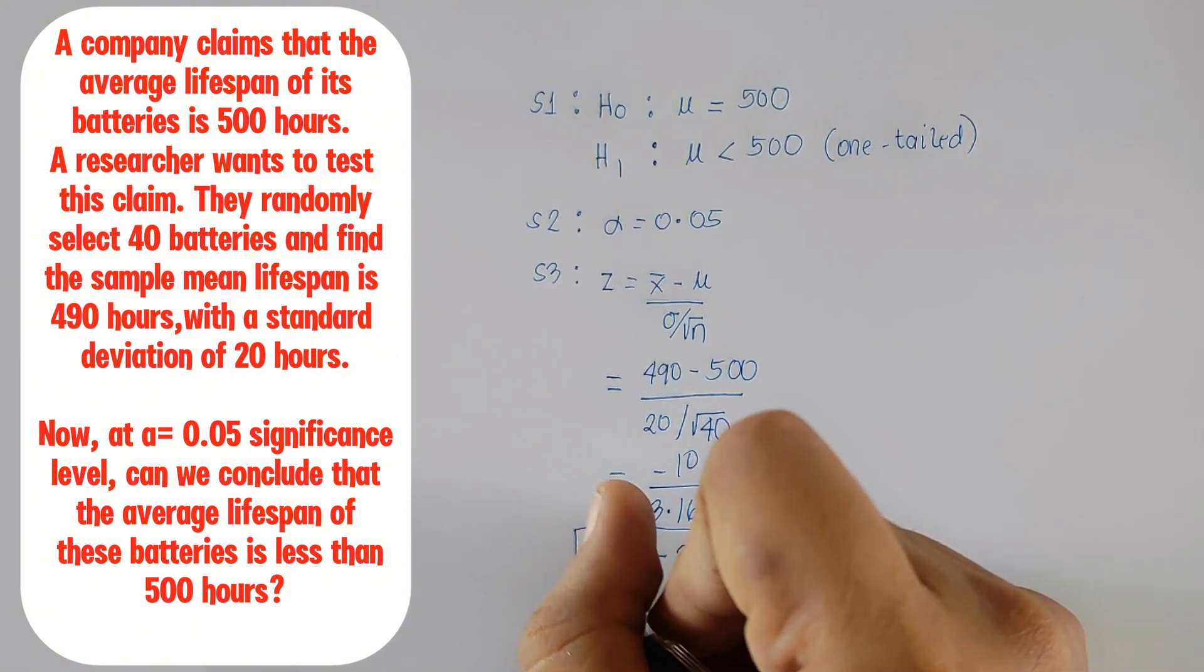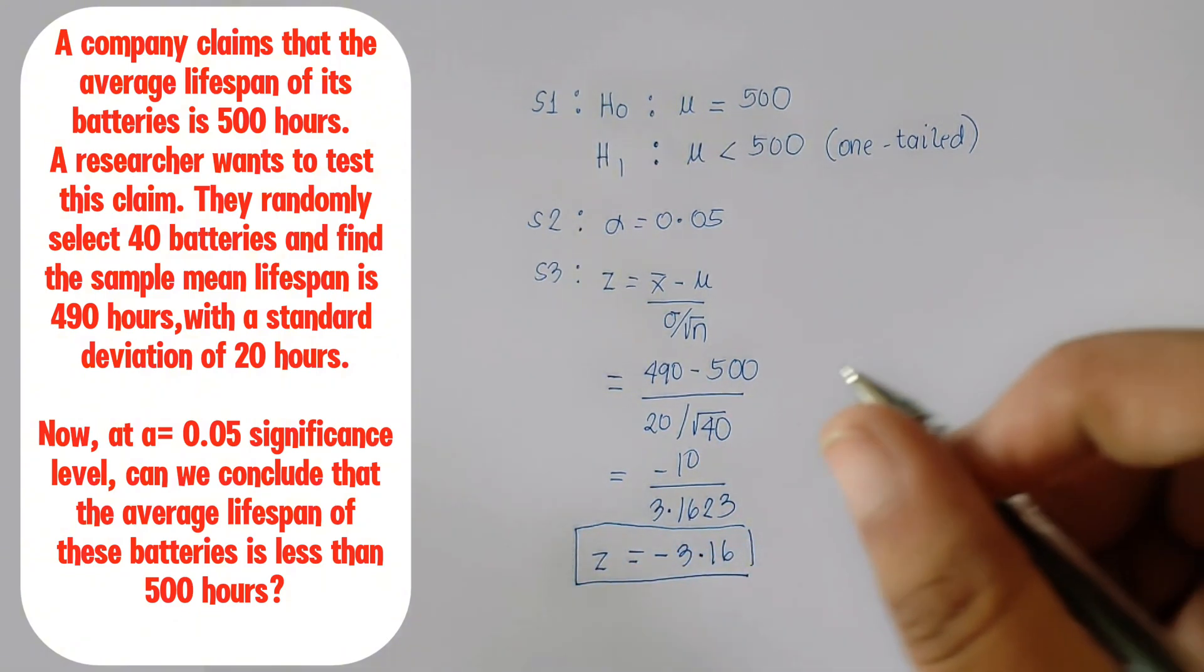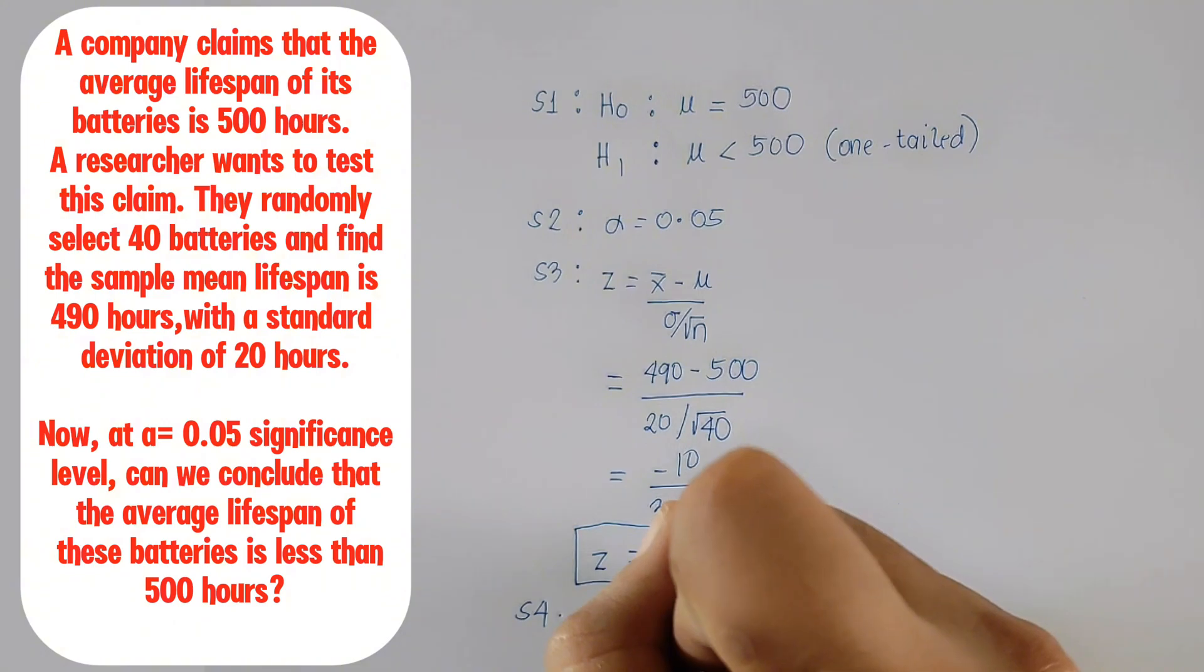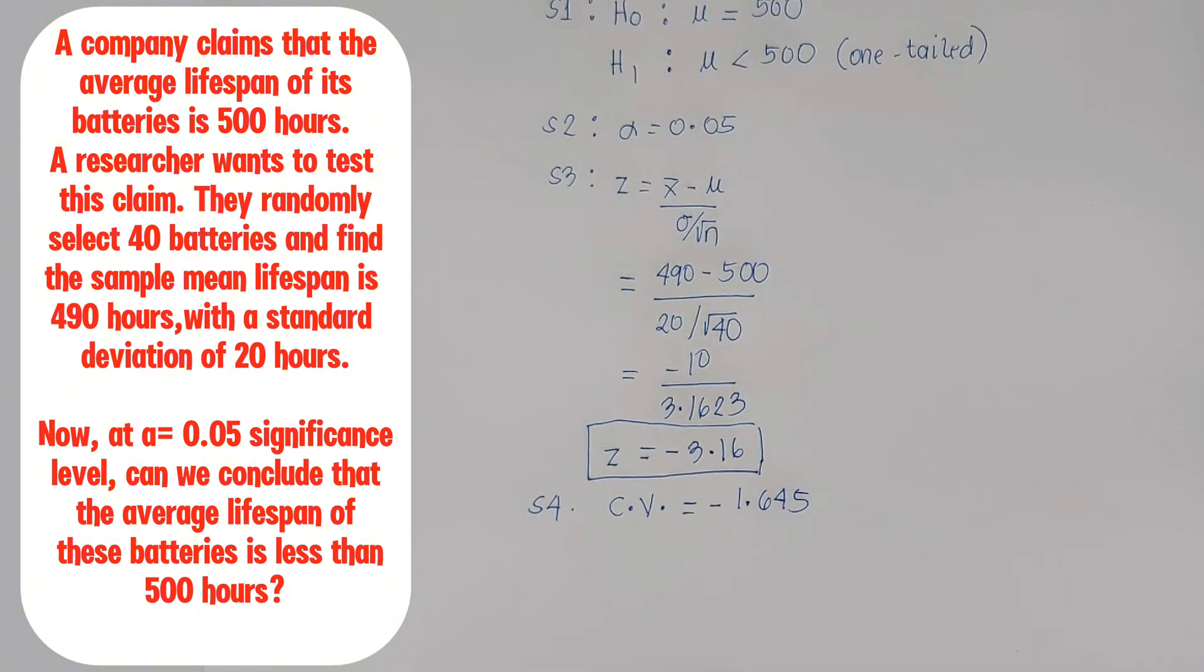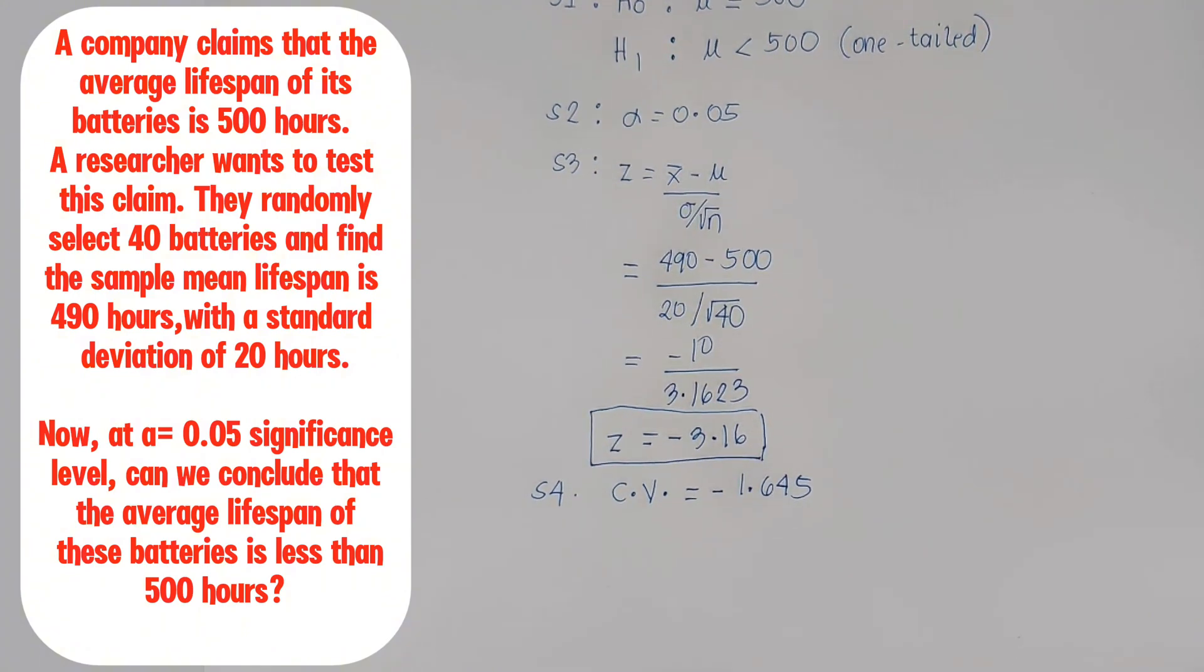So, the test statistic is Z equals negative 3.16. For a one-tailed Z test at 0.05 significance level, the critical Z value is negative 1.645. You can find this using a Z table.